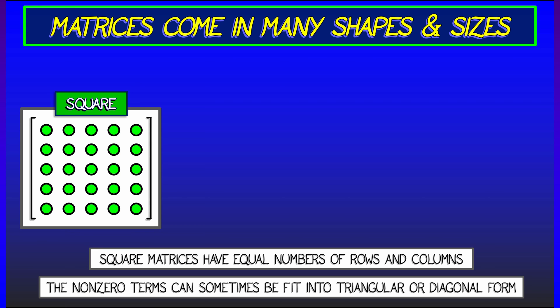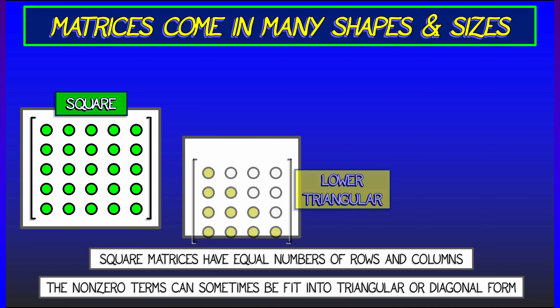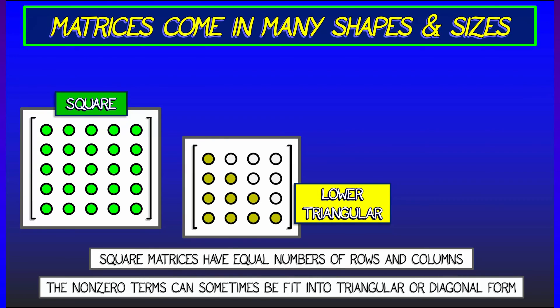the non-zero terms can tell you something more about its type. For example, a lower triangular matrix is said to be one that vanishes or has zeros above the diagonal from upper left to lower right. That's a lower triangular matrix.